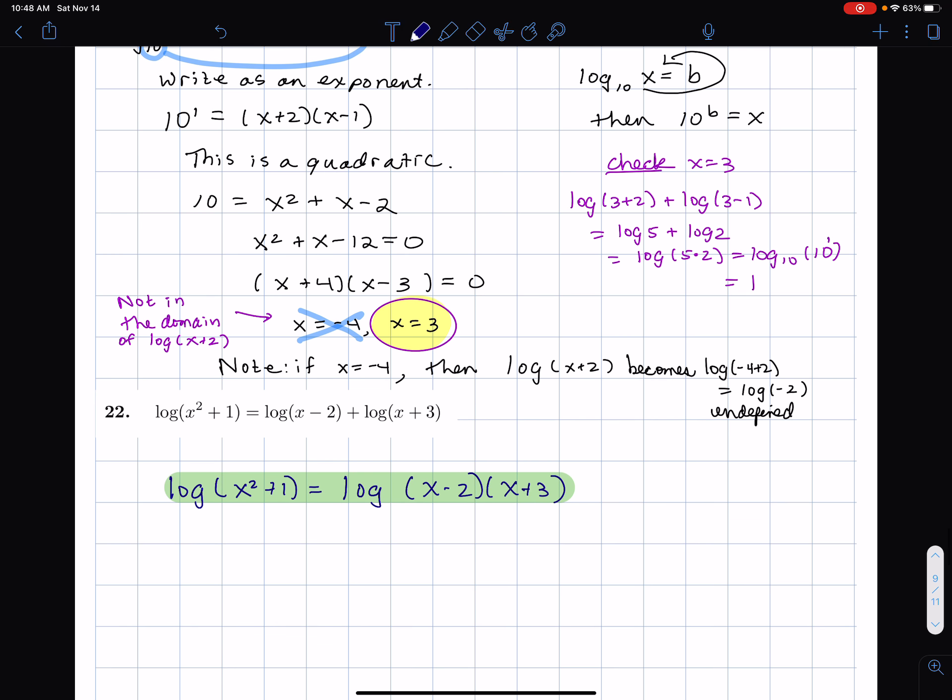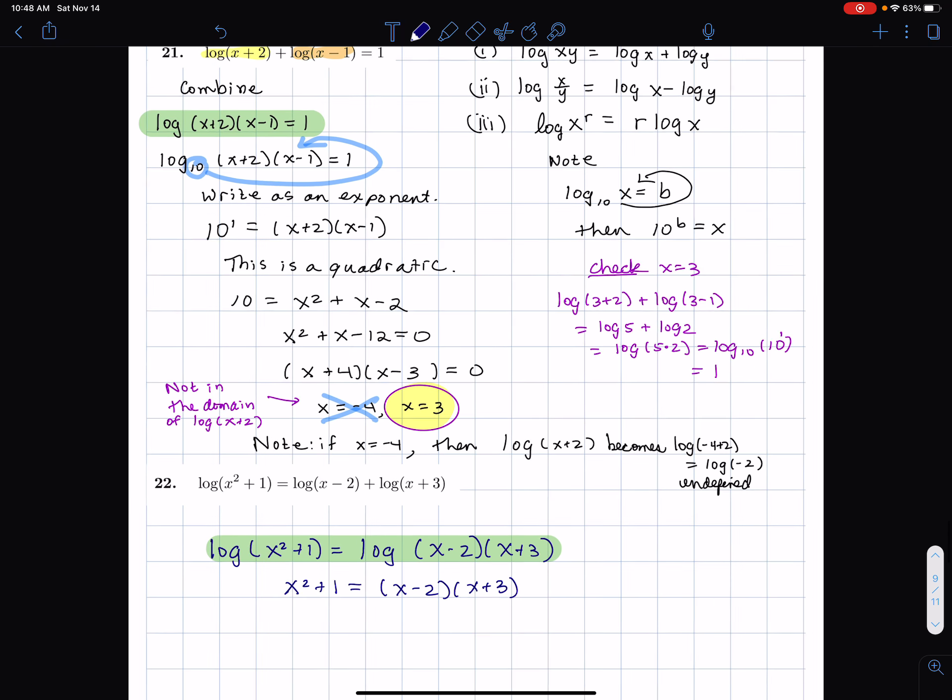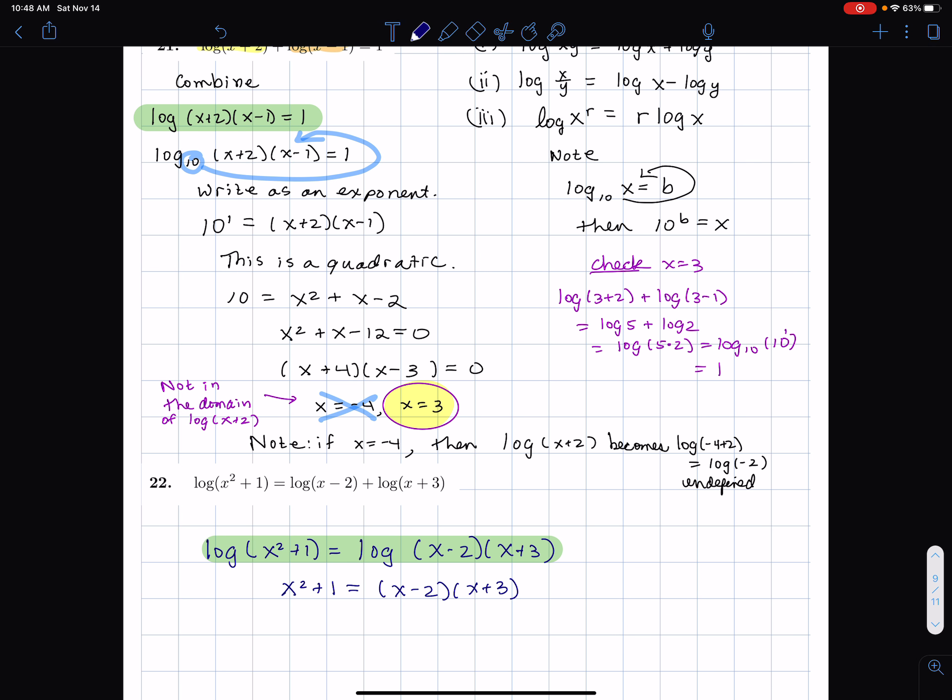And we use the one-to-one property of logarithm that says if the output, two logs are equal, then the input has to be equal. Get another quadratic. This is done very differently. Logarithm equals a number means what you write as an exponent. Here we have log equals a log. So it's different.